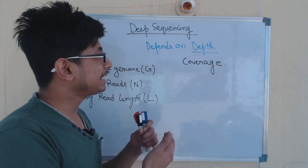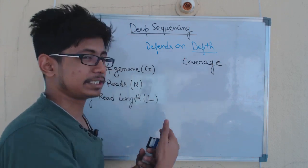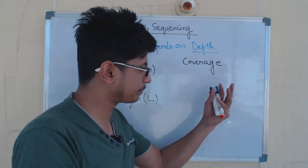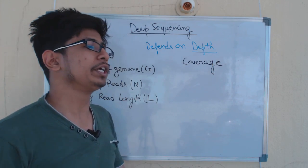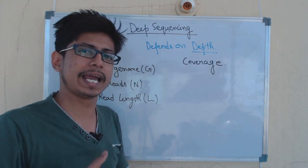That is known as the coverage. It will be high coverage or high depth for that sequencing. That is also known as the read-through: how many times you load that sequence and you want the sequencer to give you the data.